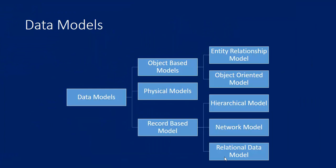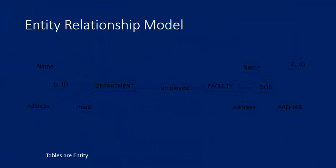In the object-based model we have the entity relationship model and the object oriented model. In the record-based model we have the hierarchical model, network model, and relational database model. In the entity relationship model, anything we are going to store in the database is called an entity, and data is stored in the form of tables.